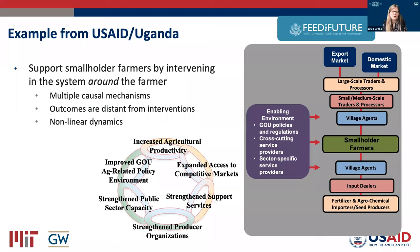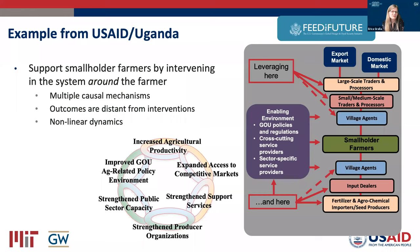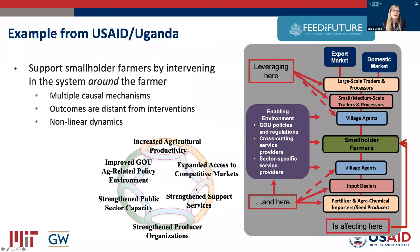Let me give a more concrete example from our work with USAID Uganda. These graphics directly from the mission describe the Feed the Future Value Chain project. The goal was to support smallholder farmers — not by intervening with the farmer directly, but with the system around the farmer: the traders who buy from them, the input dealers who sell fertilizer and seeds, the government and regulatory environment. There are six projects under this portfolio that all attack different parts of this problem. There are multiple causal mechanisms that work both close and distant from the smallholder farmers, and there's a lot of nonlinear dynamics involved in the change sought here.